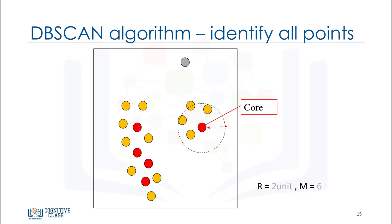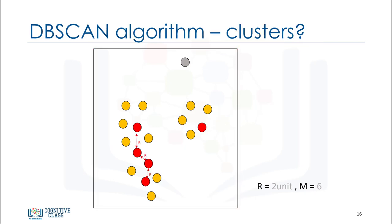We continue and visit all the points in the dataset and label them as either core, border, or outlier. The next step is to connect core points that are neighbors and put them in the same cluster.